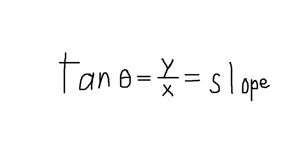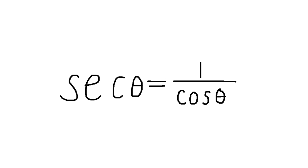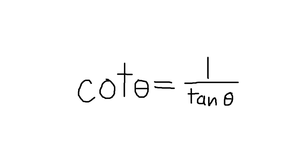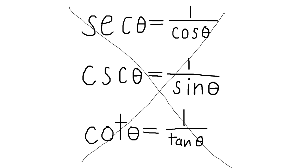And tangent of theta, opposite over adjacent, would be y over x, also known as rise over run, also known as slope. Secant of theta is 1 over cosine of theta, cosecant of theta is 1 over sine of theta, and cotangent of theta is 1 over tangent of theta. Now that I told you these, you never have to use them again. Instead, just work with sine, cosine, and tangent. Congratulations, you just learned all of trigonometry.